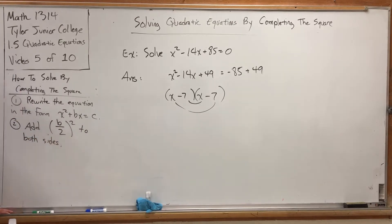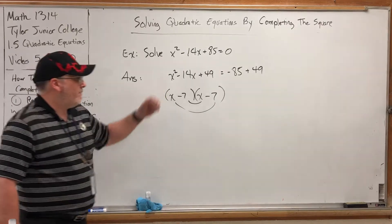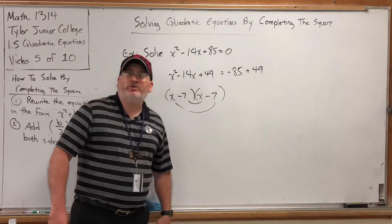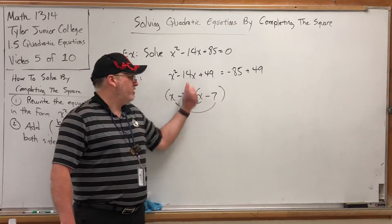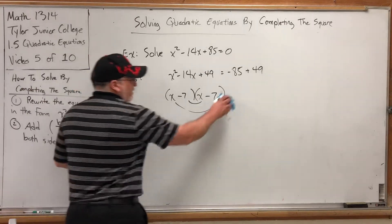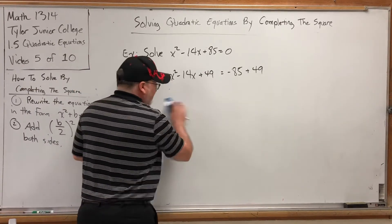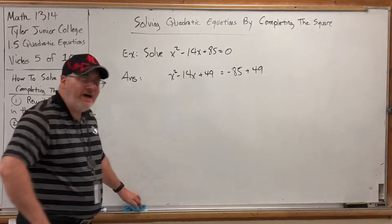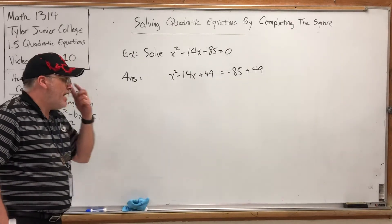And remember, don't get hung up on the letters. What this is saying is take half of this, square it, and add it to both sides. Take half of negative 14, square it, and add it to both sides. Half of negative 14 is negative 7. Negative 7 squared is 49. And that can actually happen without writing these factors. The factors justify what's happening. But that move can happen without it.